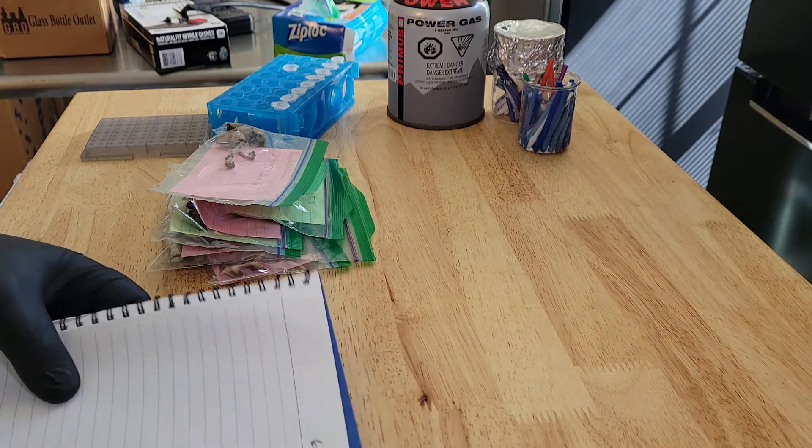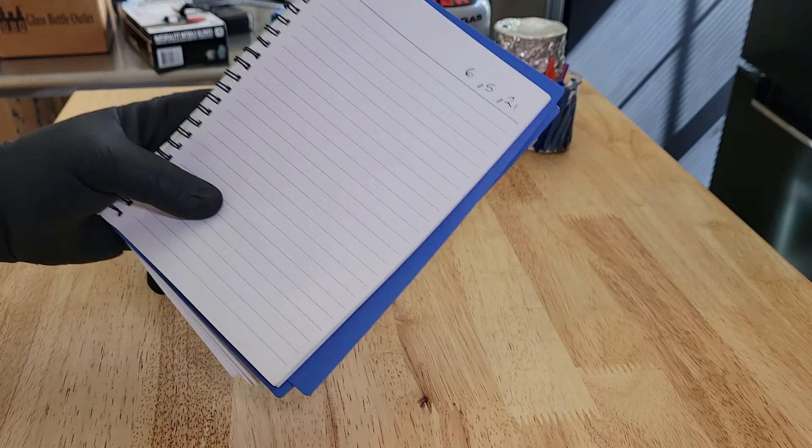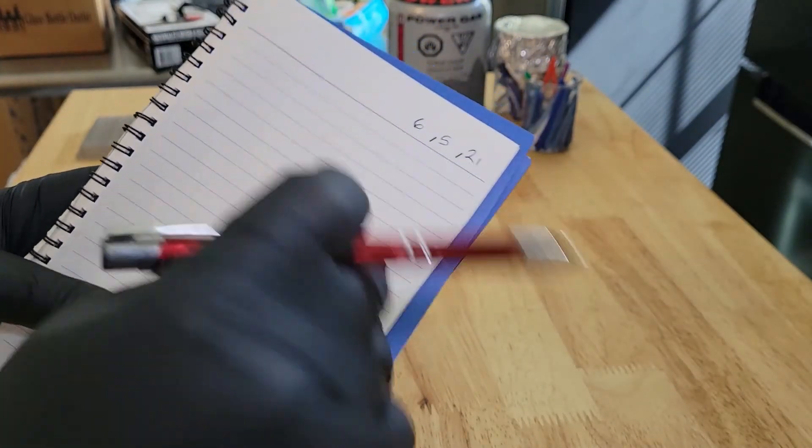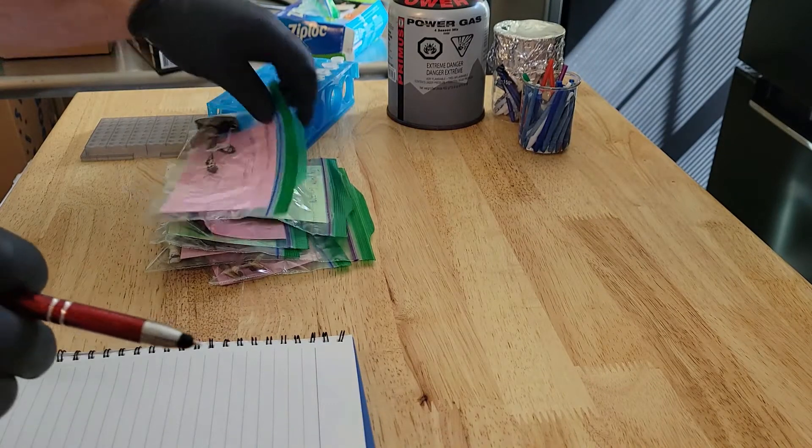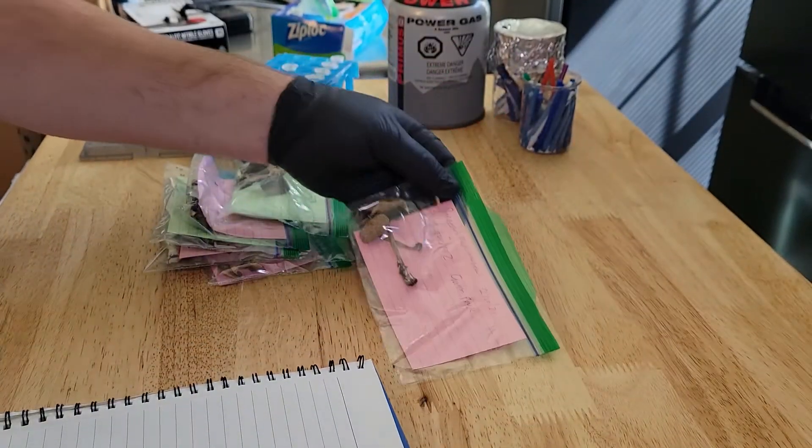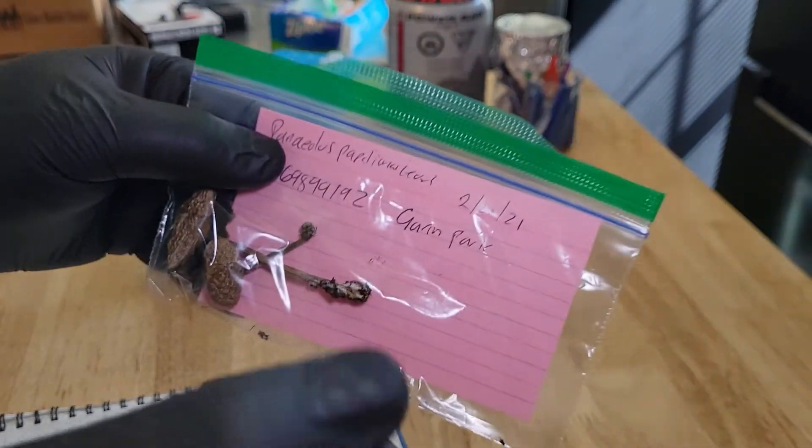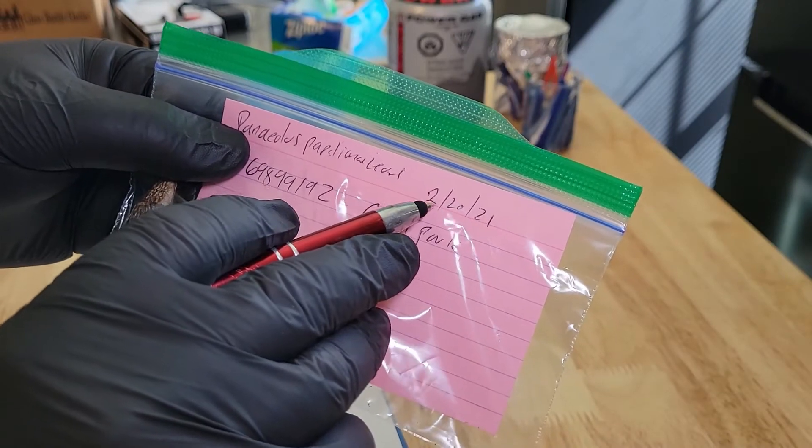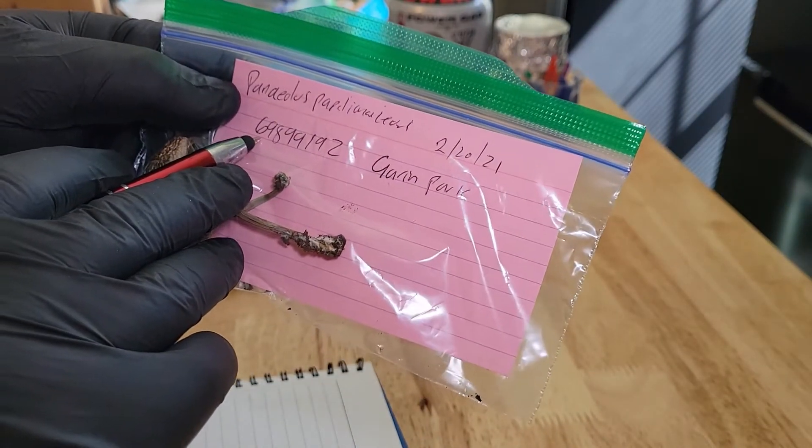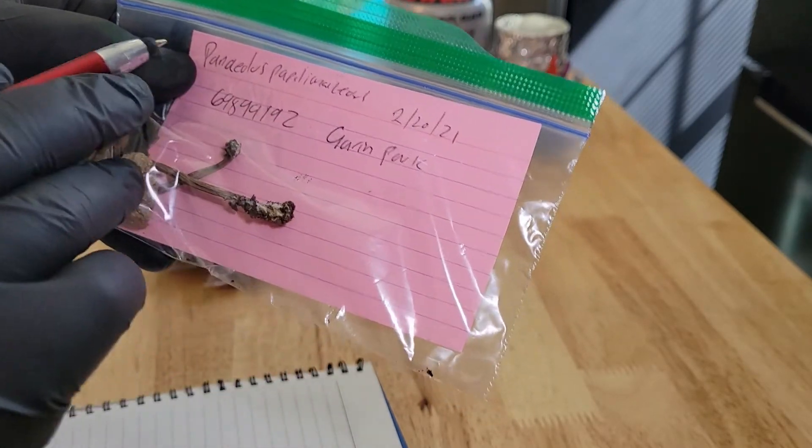Just like in class, in our home lab, we're going to keep a lab notebook. I'm going to start by putting the date, then go through my samples and assign them a tube number. The first one is Panaeolus papilionaceus that I collected February 20th. Here's the iNaturalist observation number.